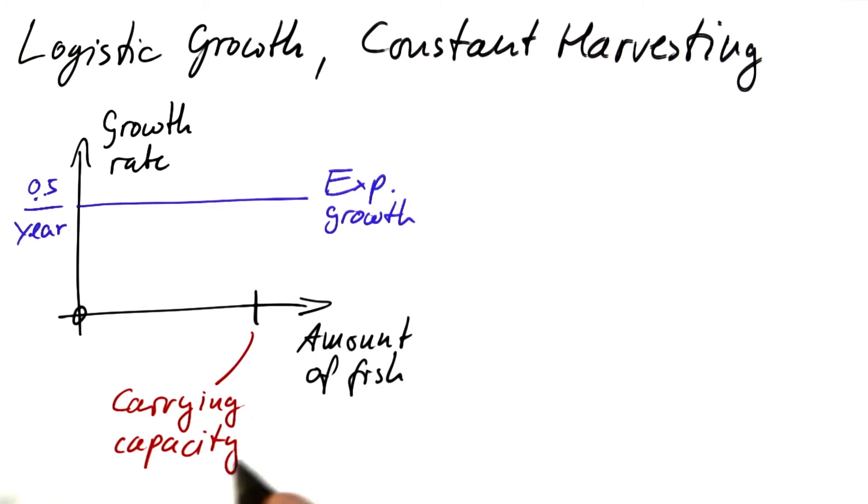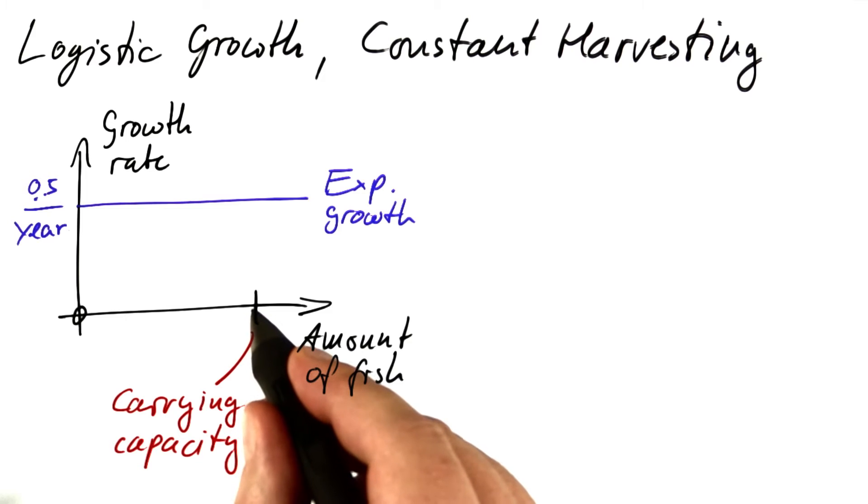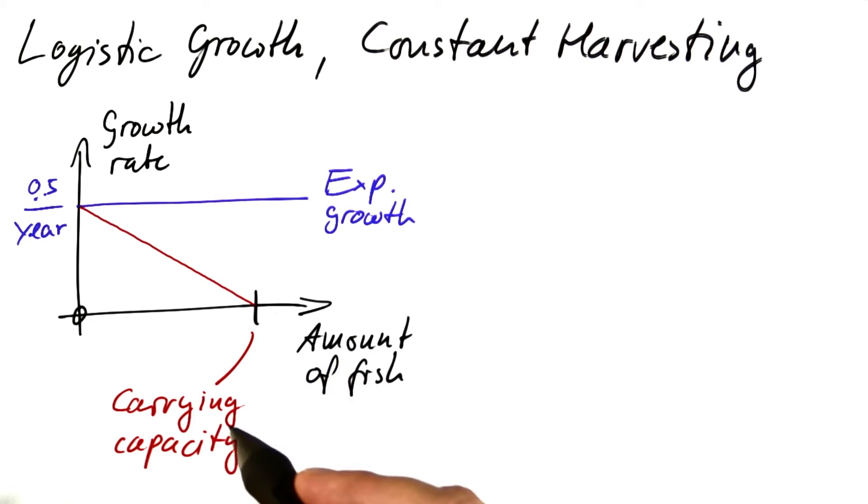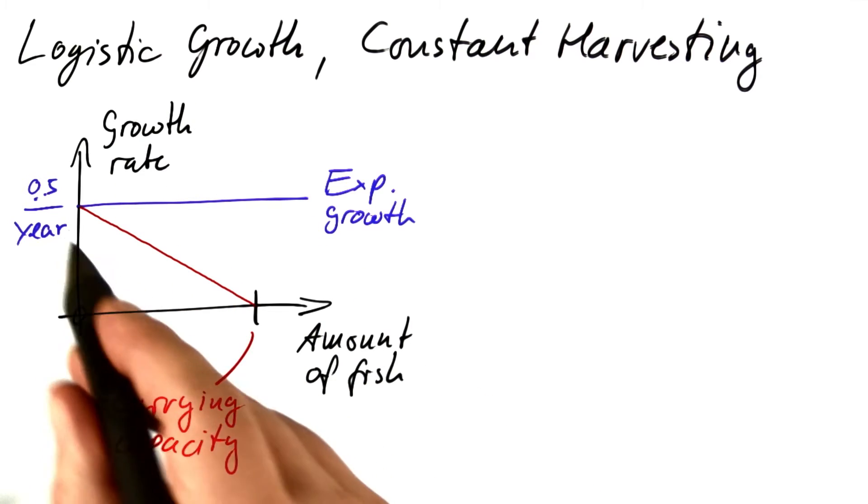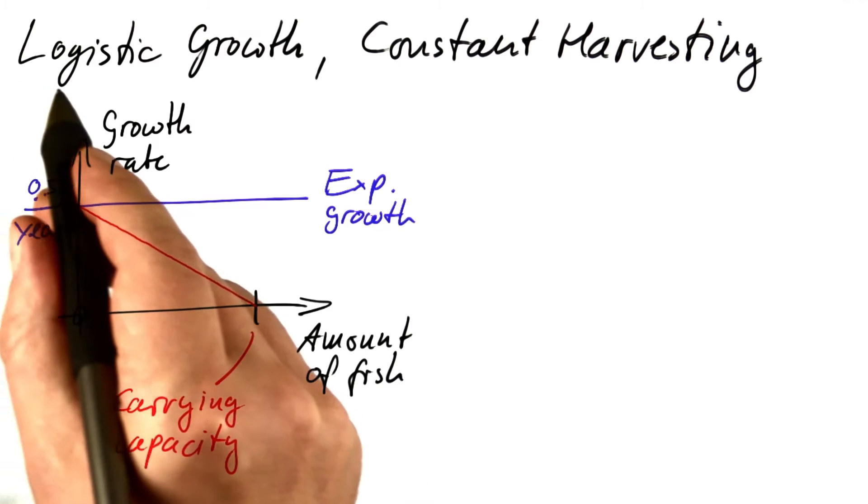There should be some sort of carrying capacity at which the growth rate becomes zero. The easiest way to include this effect is to use a growth rate that depends on the amount of fish in a linear fashion. This is called logistic growth.